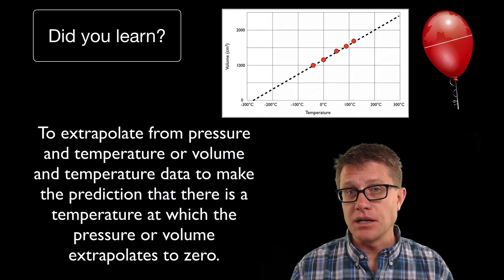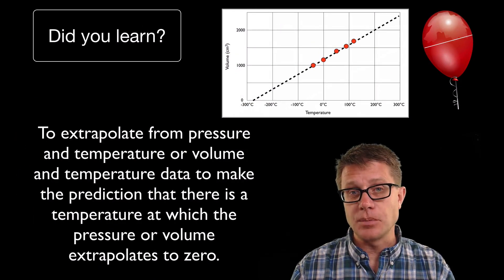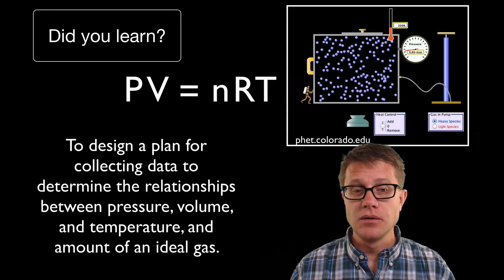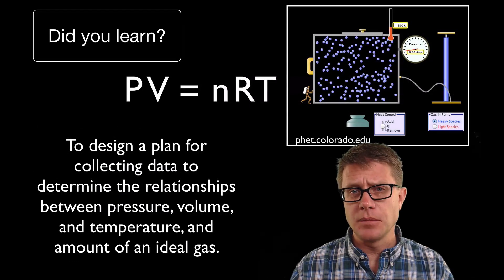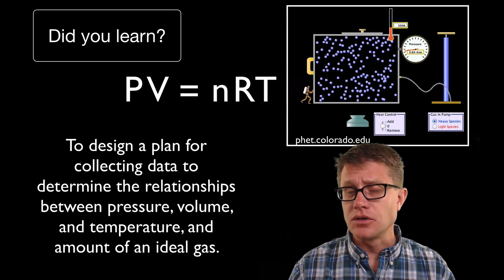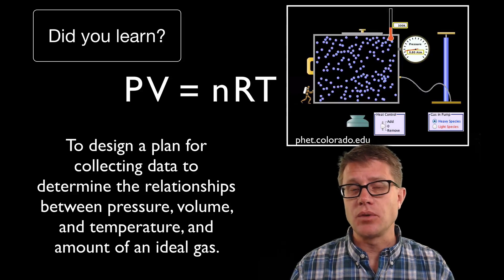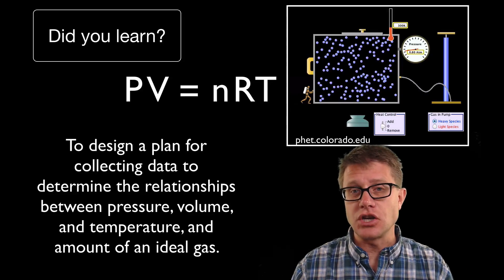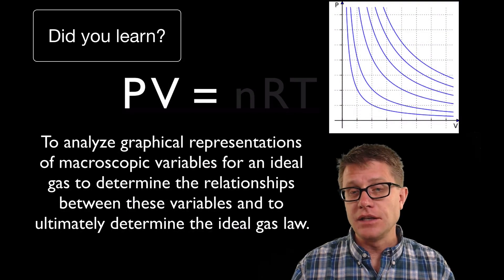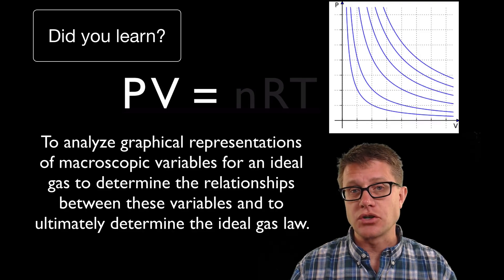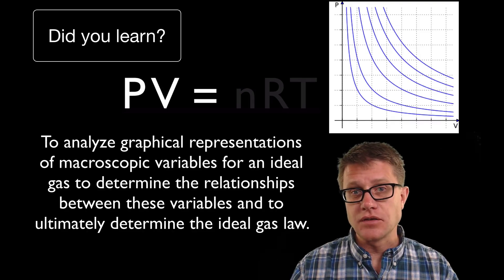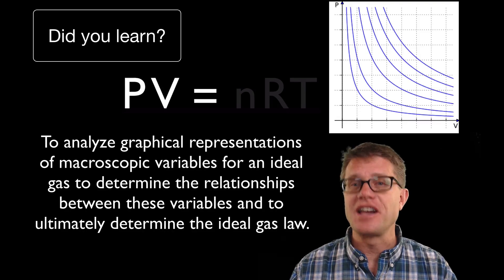And so did you learn to extrapolate from a volume versus temperature graph to figure out absolute zero? Do you understand how you could design an experiment to play around with these using the PHET simulation? Remember you want to keep some of them constant and then just change one at a time. And then finally could you analyze the relationship between pressure and volume? So we are going to get these curves. Each of those represents a different temperature. And I hope that was helpful.